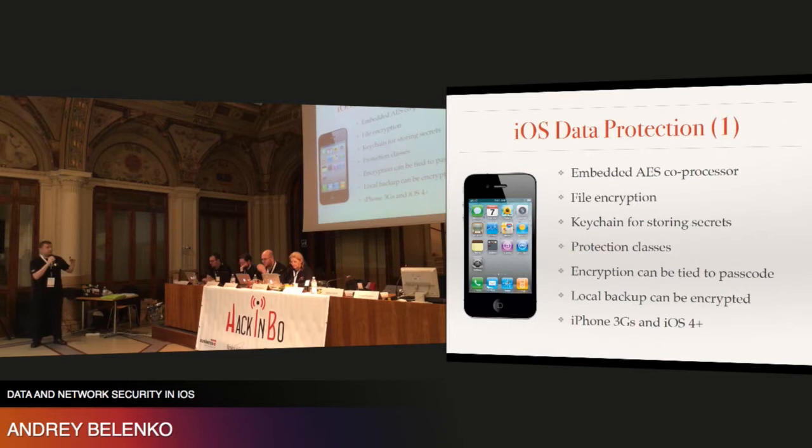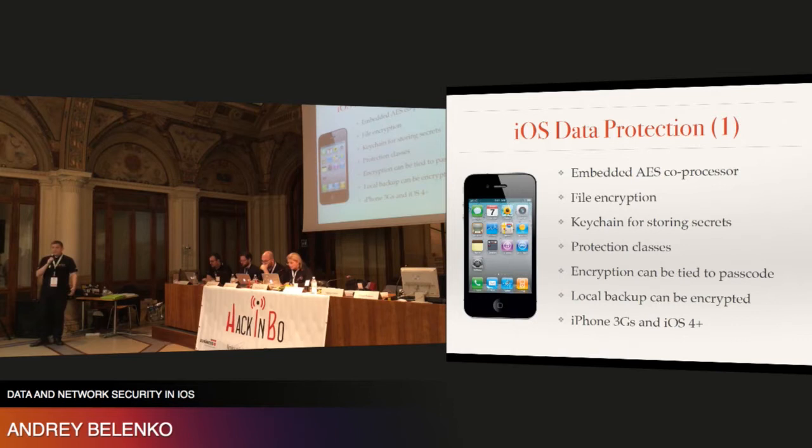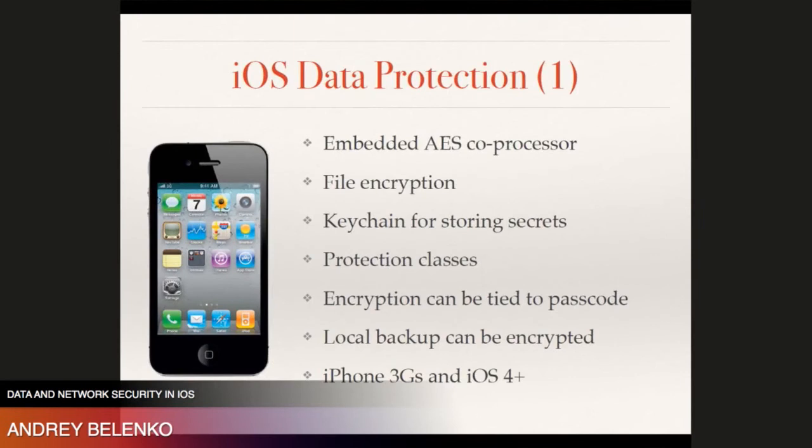Each and every iOS device has its own encryption co-processor with a hardware-encrypted, device-specific encryption key which is hardwired into this co-processor. iOS devices offer file encryption. They also provide a keychain that you can use to store application secrets like private keys, passwords, and access tokens.